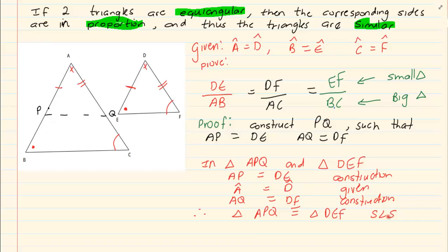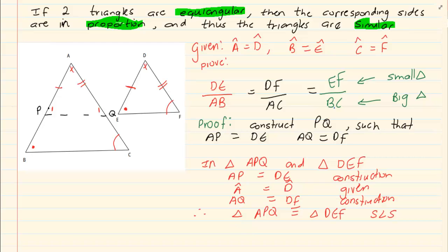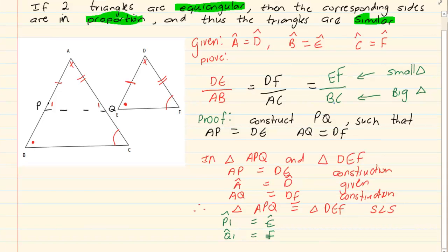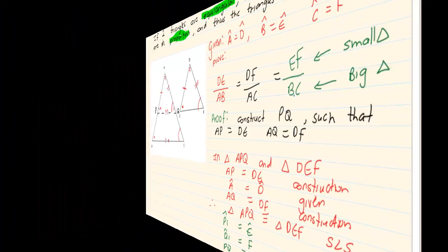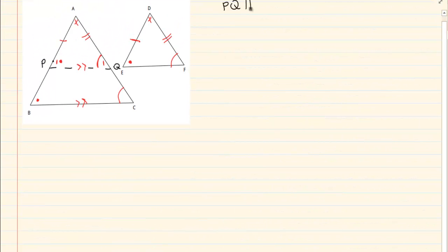Once we have congruency, what can we deduce? If we label the angles P1 and Q1, from the deductions of congruency we get that P1 is equal to angle E, and Q1 is equal to angle F. Now if P1 is equal to E and Q1 is equal to F, what can I say about line PQ and BC?